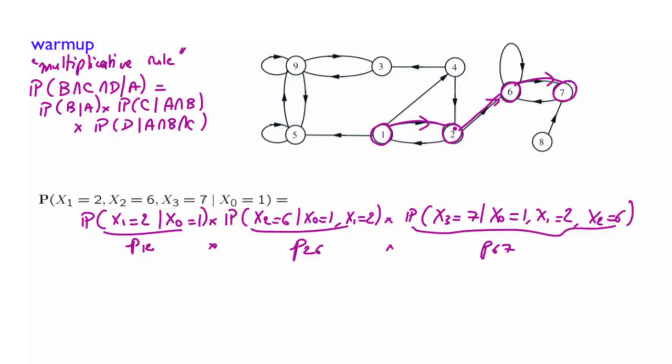The important message here is that to find the probability of a specific trajectory like this one, you just need to multiply the transition probabilities that you find along the trajectory. So this is what we have here.